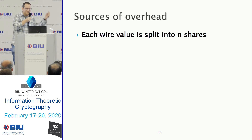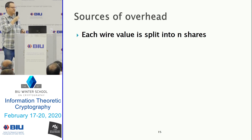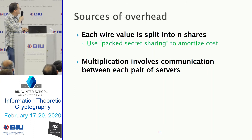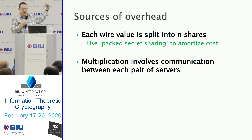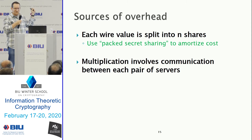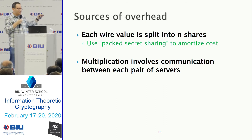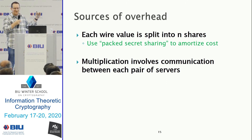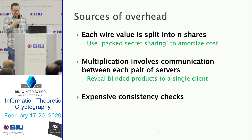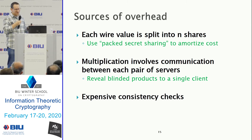What are the sources of overhead? First, each wire value is split into n shares, so we immediately lose a factor of n in communication before any computation. Second, servers talking to each other for each multiplication gives quadratic communication cost per gate. Third, VSS is quite complicated and uses expensive machinery. These are the three sources of overhead we need to address.